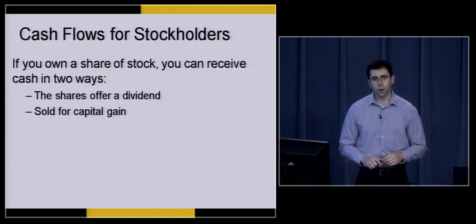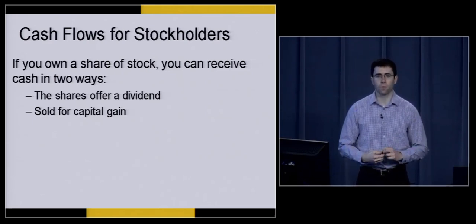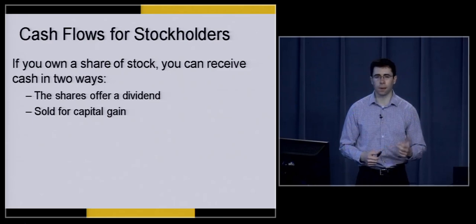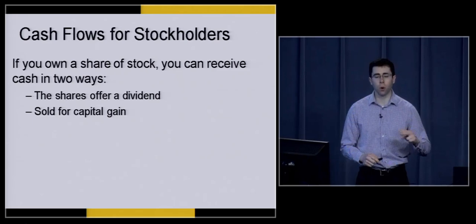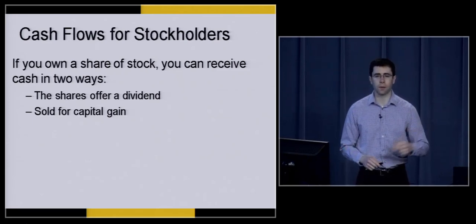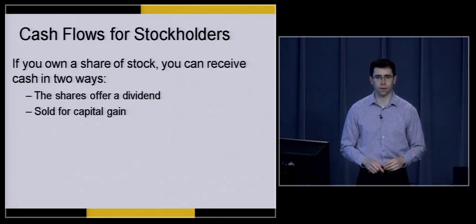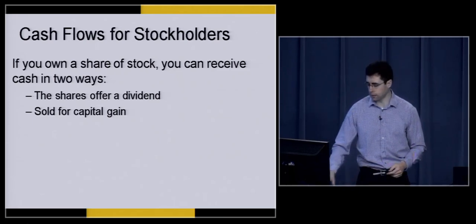The other type of cash flow you can typically receive from owning a stock is simply by selling it. So if you sell a stock for a capital gain — meaning you sell it for more than it's worth — that cash flow has to be factored in when you're determining the intrinsic value of a stock.